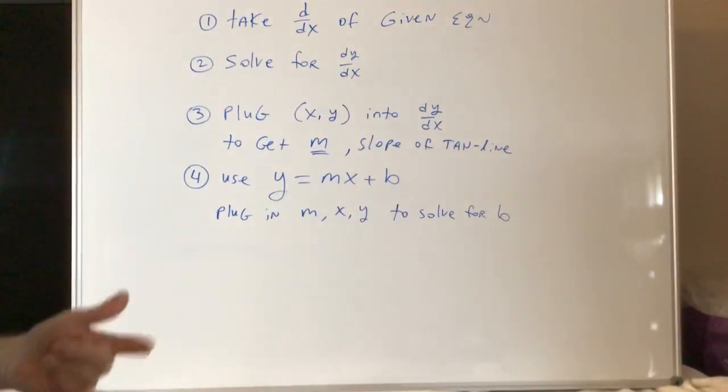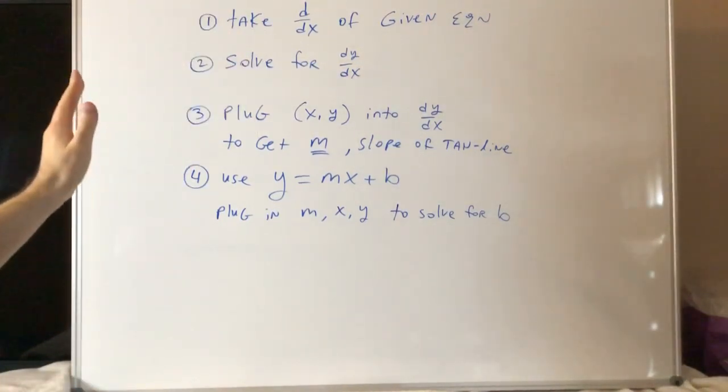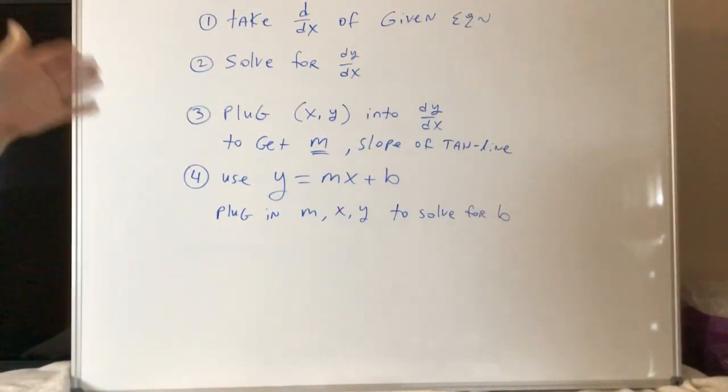So remember how you do implicit. When you take the derivative of x, you do it normal. When you take the derivative of y, you do it normal, and you multiply it by dy/dx. So you're going to get dy/dx's. You get them on the left or the right. Get them on one side and solve.